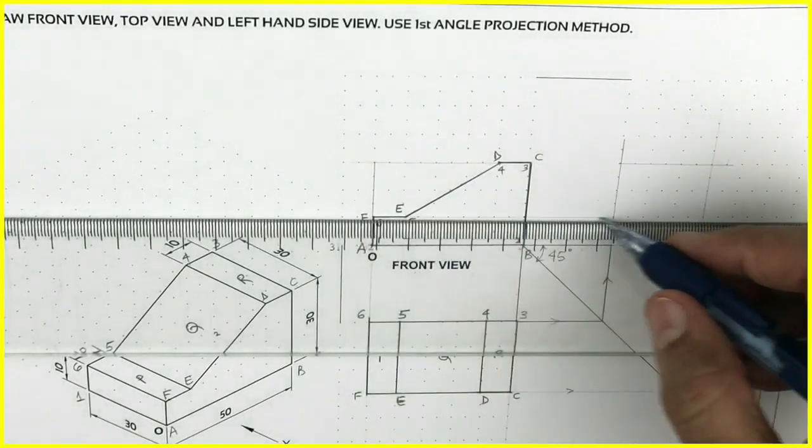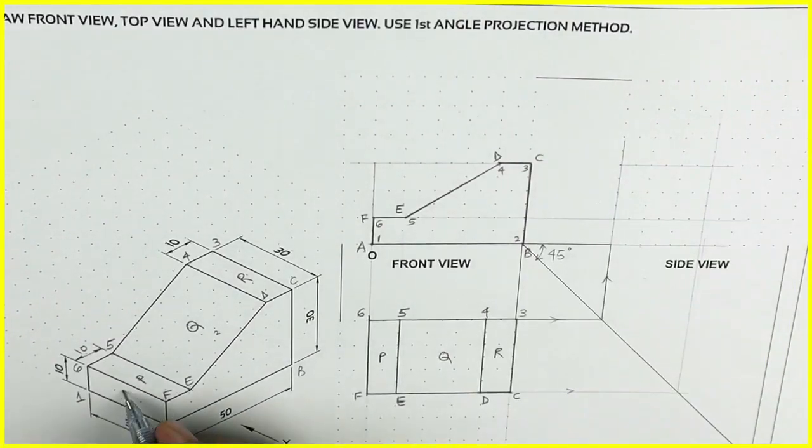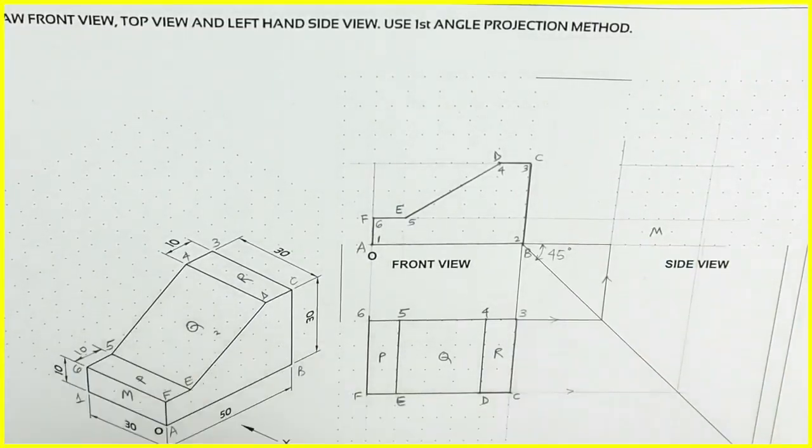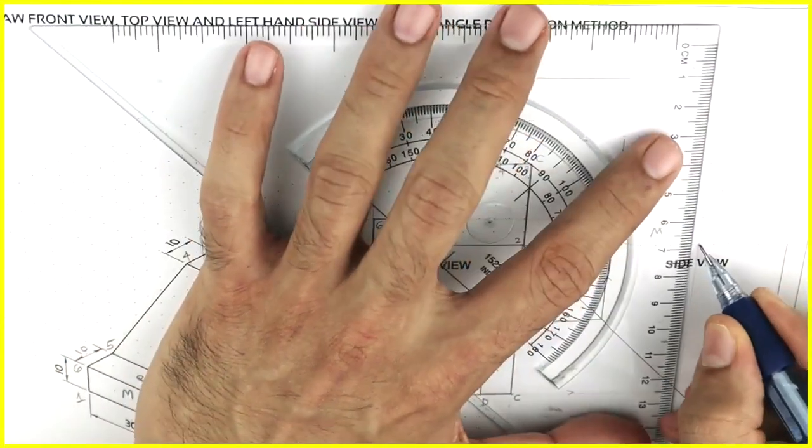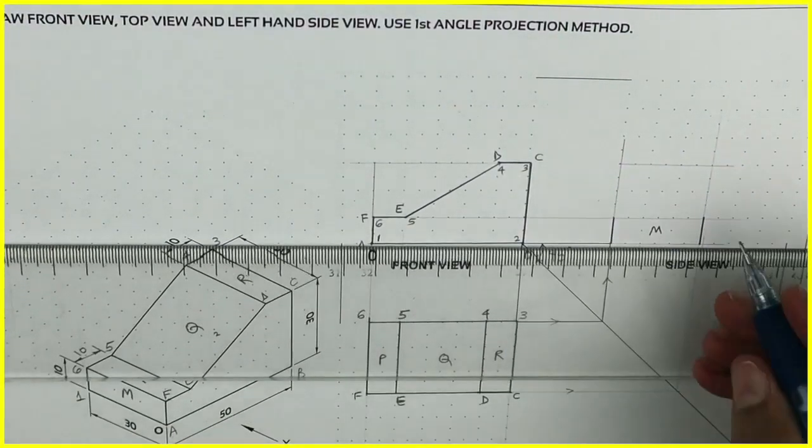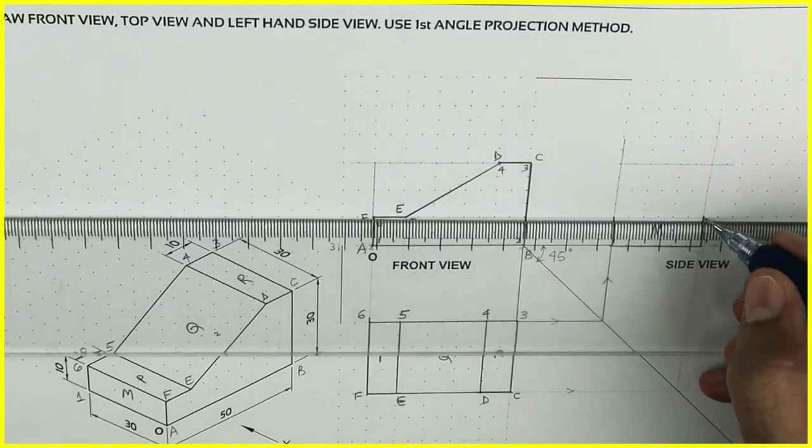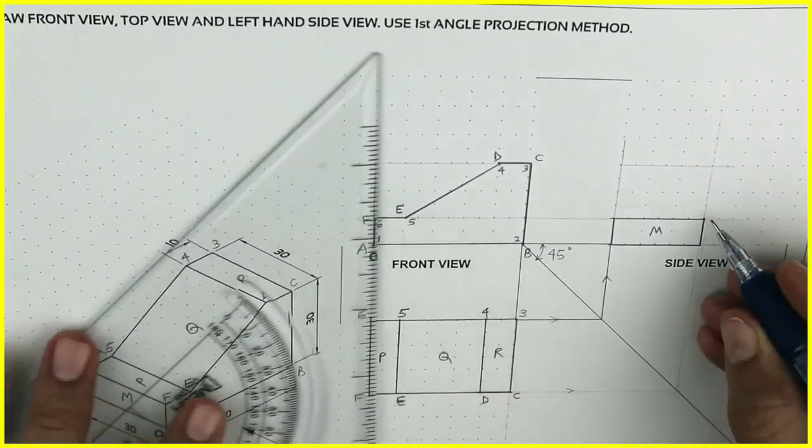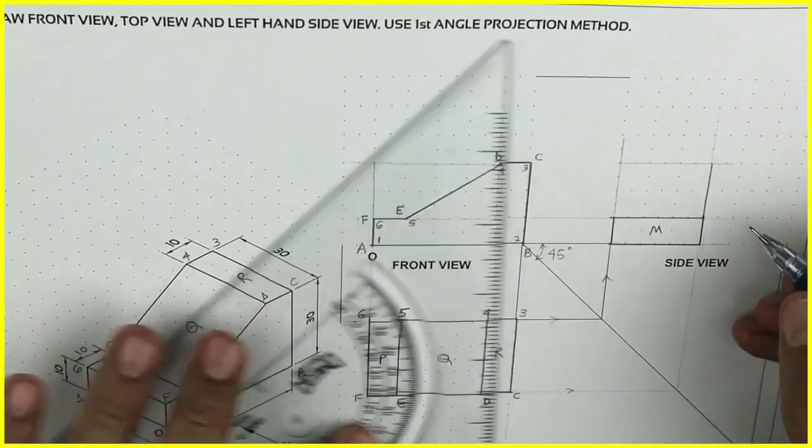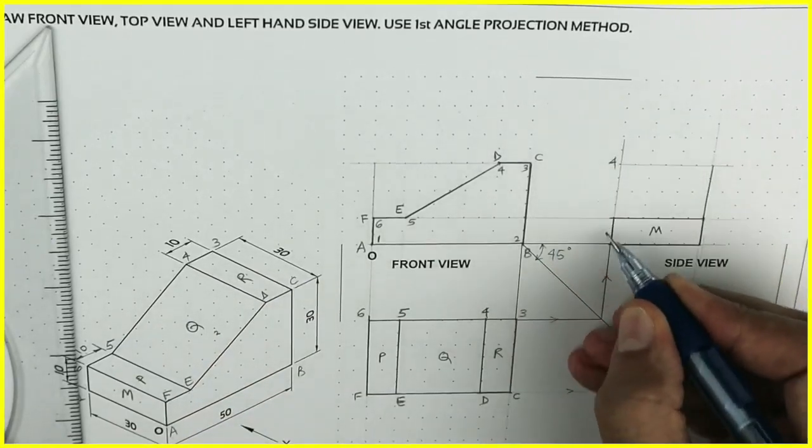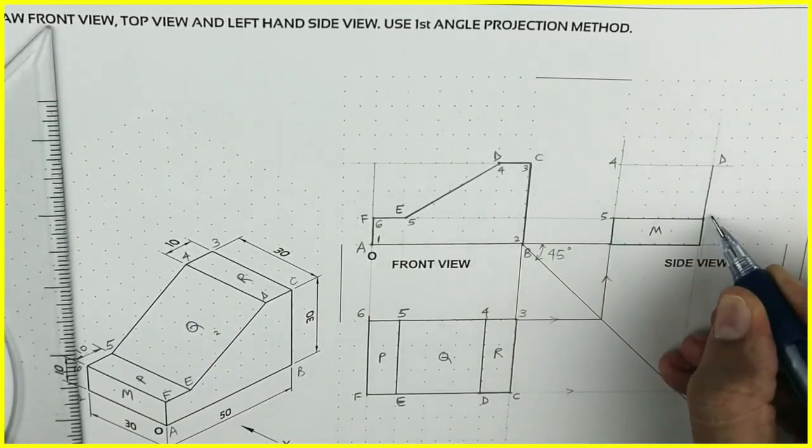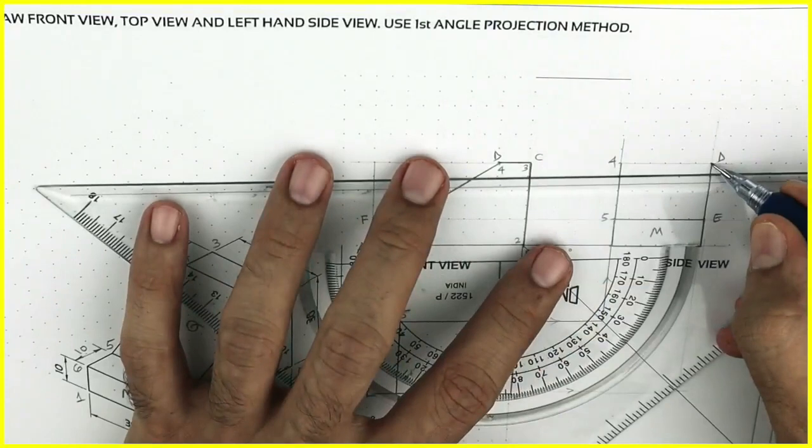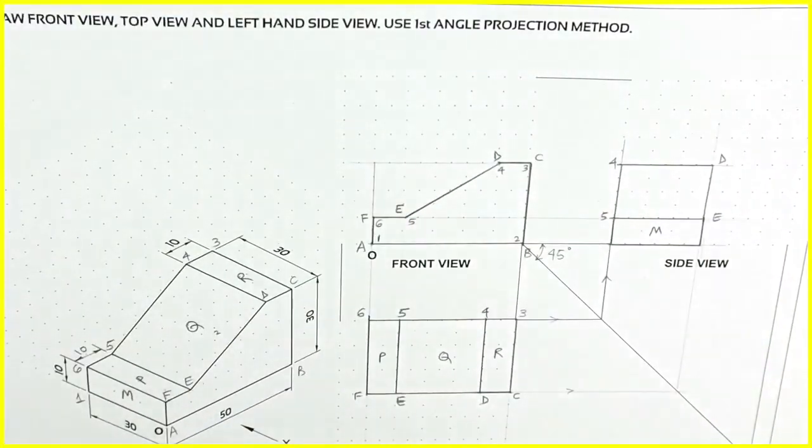Now we will draw side view. We will draw line from front view. So we are getting portion M and Q. So I can write M, height is 10. And then you draw horizontal line from, yes. So you'll get 30 by 10 lower portion. Now if you see this slope, which will appear as a straight line. This slope will also appear as a straight line, which is 4, D, yes, 4, 5. So we can darken this portion also. So side view is also done.